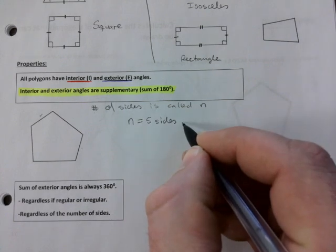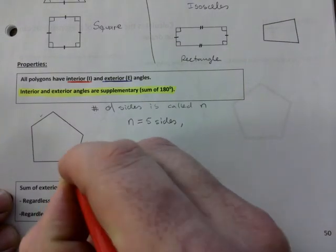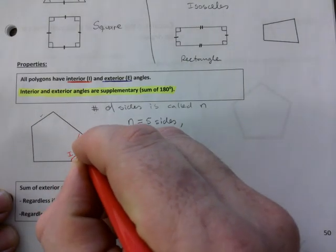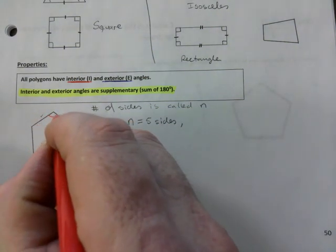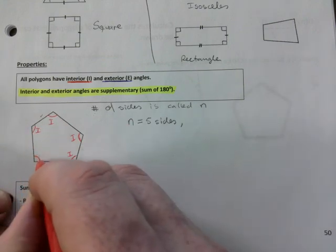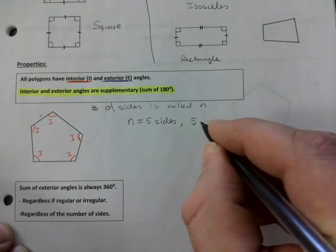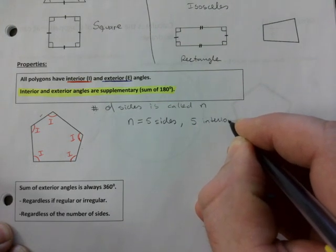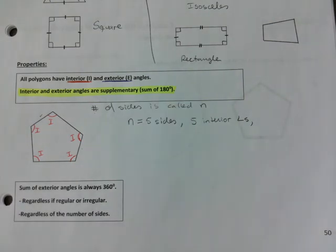And watch this. It will have five interior angles. So every single angle on the inside. Triangle has three. This will have five. Put capital I's everywhere there. So it has five interior angles.